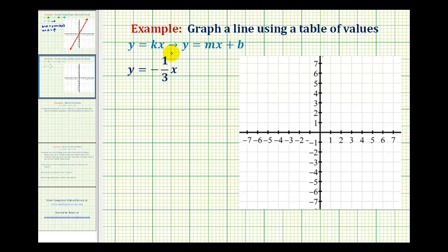But to graph this, we can think of slope intercept form, or the form y equals mx plus b, where b would be equal to zero, and m would be the slope of the line.